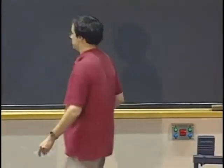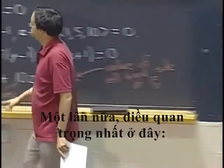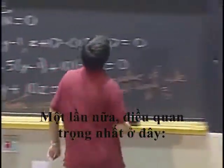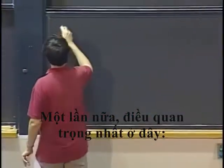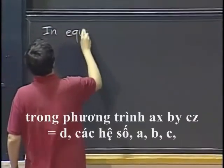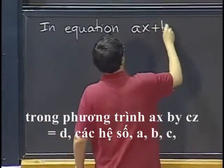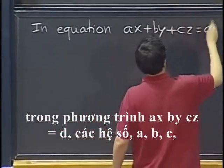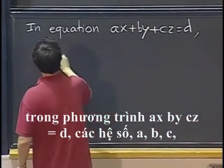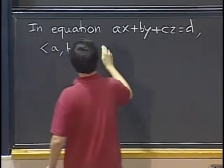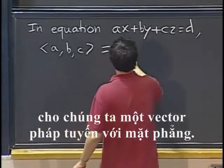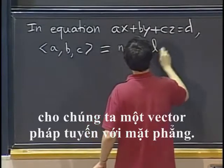So, again, just to repeat the single most important thing here: in the equation ax plus by plus cz equals d, the coefficients a, b, c give us actually a normal vector to the plane.